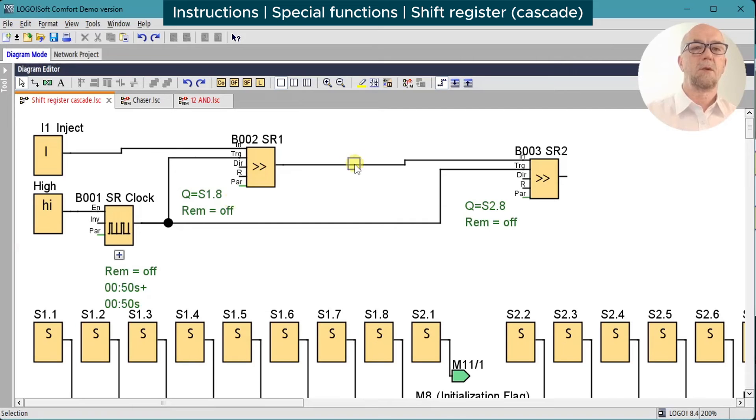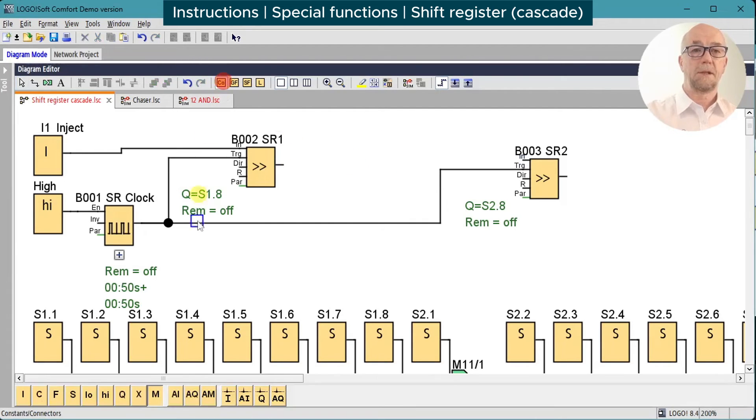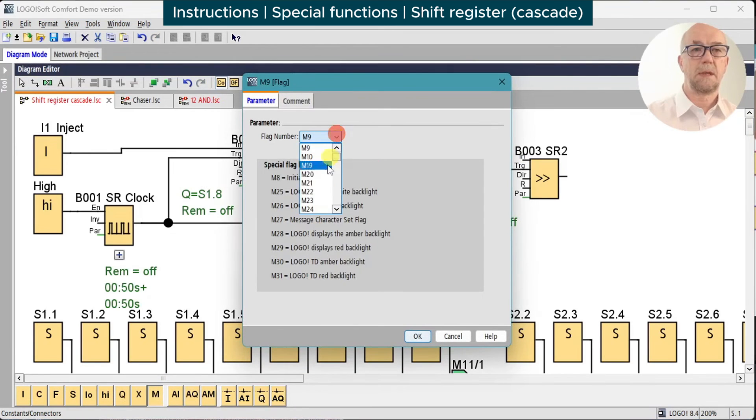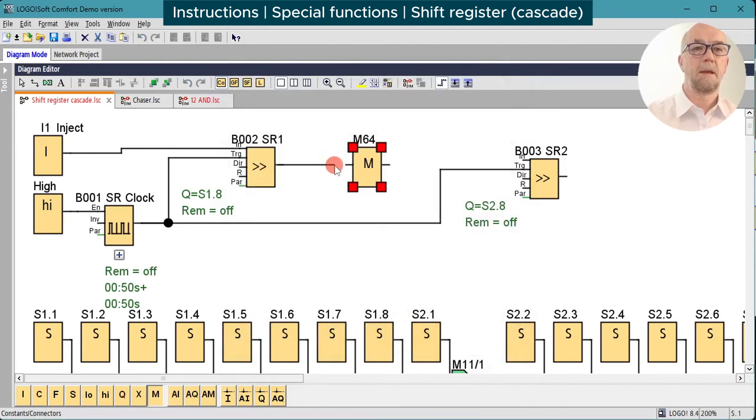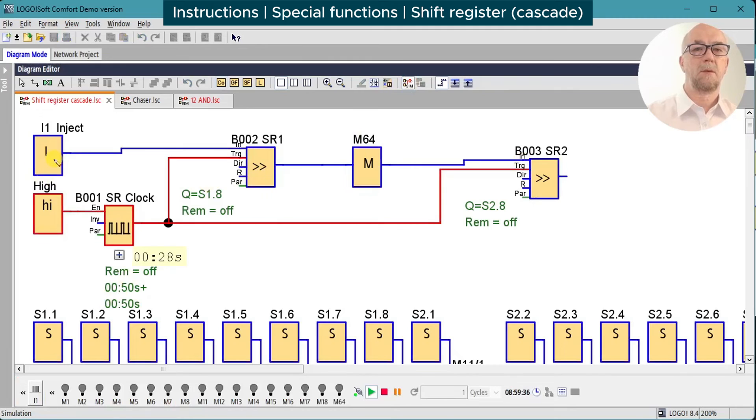So to fix this, we're going to put our delay in here. From the constants, we'll select a flag, drop it in. I'll change the number on this so that we keep out of the range of all the other ones we're using for our simulation display - M64 will do fine. Wire that up, run our simulation.